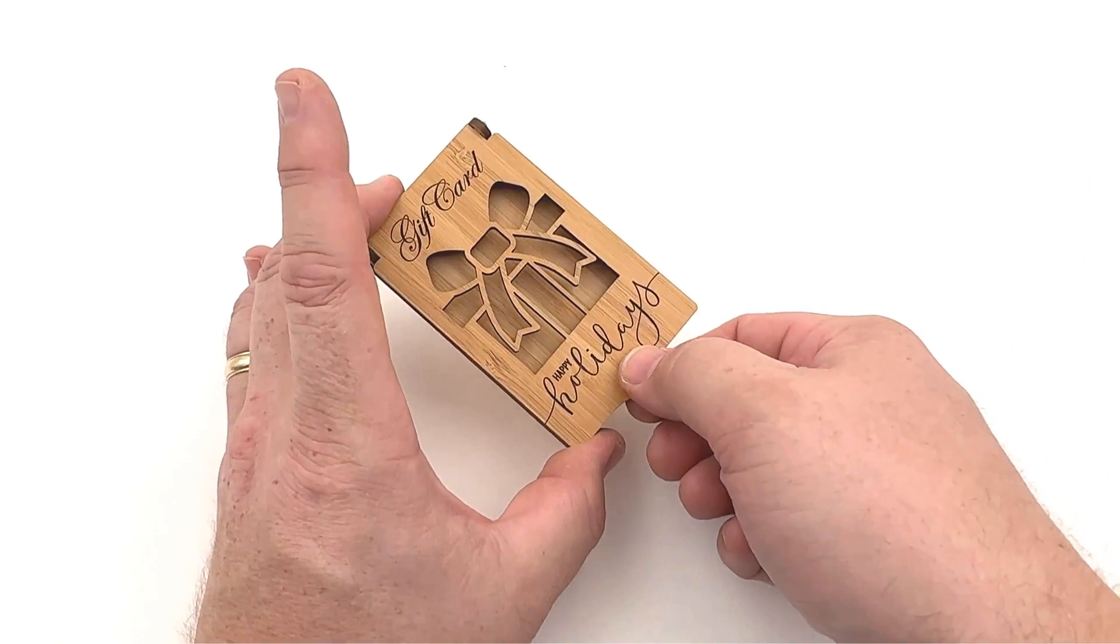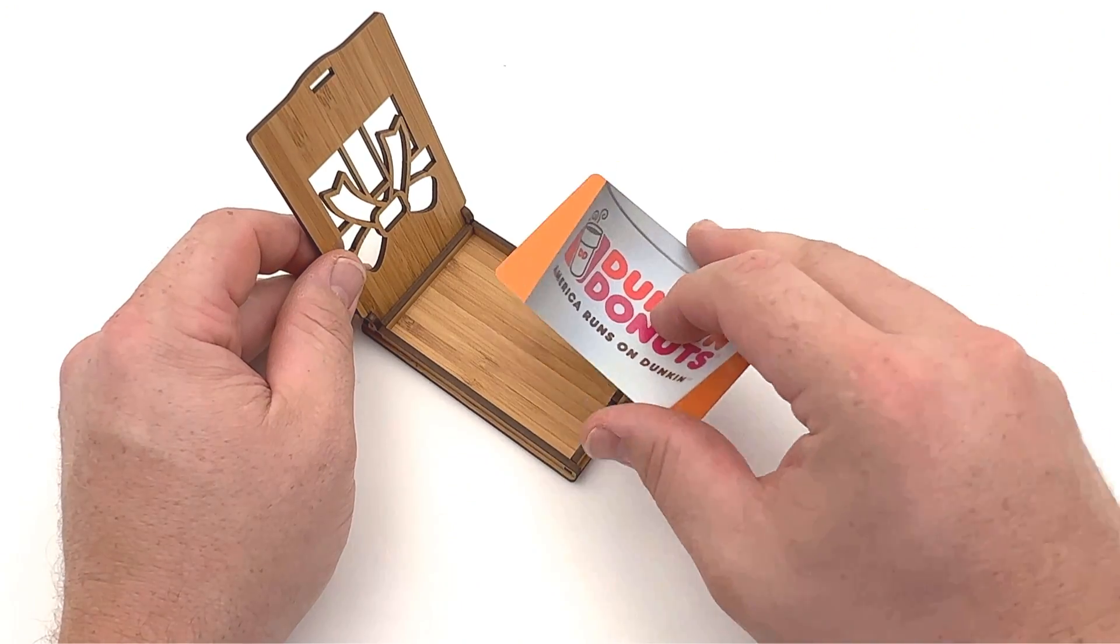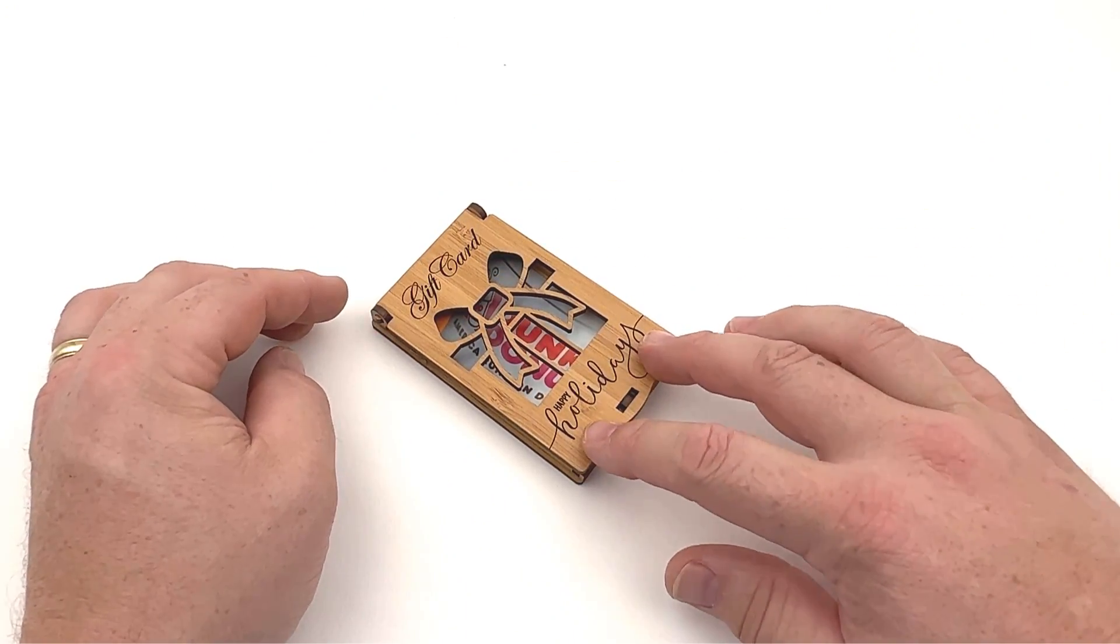To open the box, press the front center connector and pull up on the lid and the box will open. After inserting the gift card, snap the top back down to close the lid.